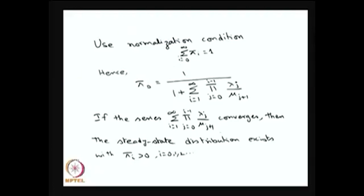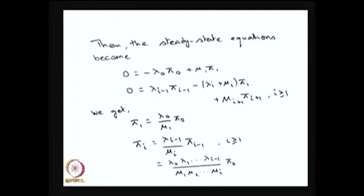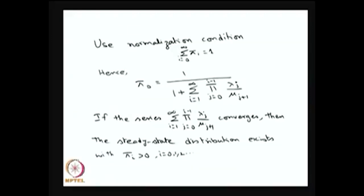Whenever this series converges, we have a steady state distribution with positive probabilities summing to 1. This is the condition for a steady state distribution of a birth-death process. Using the forward Kolmogorov equation with the two conditions and the normalizing condition, we get pi_0. If the series diverges — by substituting the values for lambda_i's and mu_i's — then pi_0 equals 0, and in turn all pi_i's equal 0, so the steady state distribution does not exist.